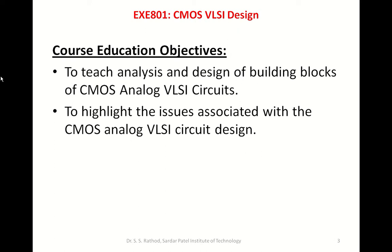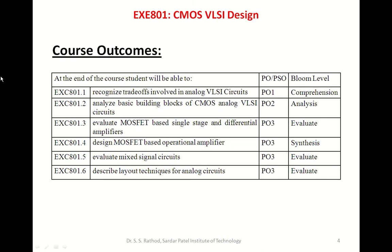The next objective is to have an understanding of the trade-offs involved in the design of these various circuits. There are six course outcomes expected in this course. Course outcome one is: a student will be able to recognize trade-offs involved in analog VLSI design circuits, particularly because there is an octagon, so we need to study a lot of trade-offs. It has been mapped to program outcome one, which is engineering knowledge, and the Bloom's level expected is comprehension.